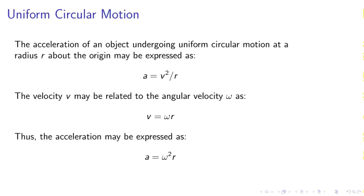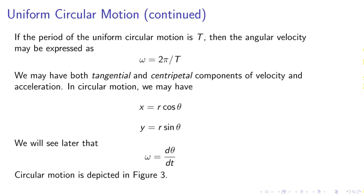Also, uniform circular motion. We can express the acceleration as V squared over R, where V would be related to the angular velocity as V equals omega R. Then the acceleration would be expressed as A equals omega squared R.